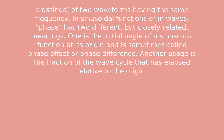Phase has two different but closely related meanings. One is the initial angle of a sinusoidal function at its origin, sometimes called phase offset or phase difference. Another usage is the fraction of the wave cycle that has elapsed relative to the origin.